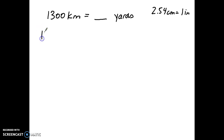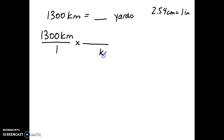First, take the given value and place it over one. Notice I don't have a conversion factor that includes kilometers directly, so I need to think about how to get closer to that conversion factor. From the previous lesson on metric-to-metric conversions, the best approach is to put kilometers in the denominator of the next conversion factor. If I can get to centimeters, that puts me closer to inches, which is where I want to go.